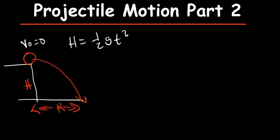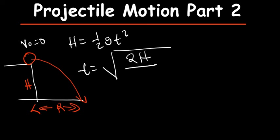We said that if you want to find time, time will be the square root of 2h divided by g. And if you want to find the range in this case, range will be vx times t. These are the only formulas we talked about under the first case.